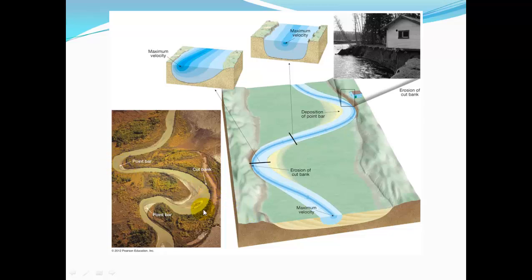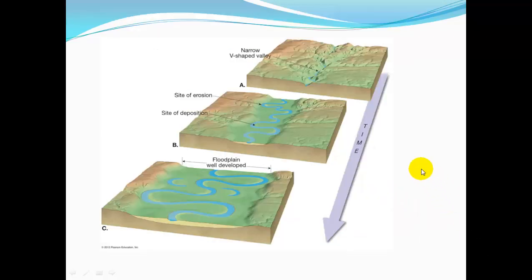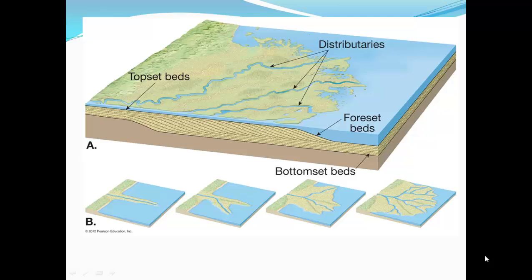The outside of a meander is cutting away — eventually a house there will fall into the river. On the inside, a point bar, a little beach, is being formed by deposition. The outside is the cut bank. Over time, a river starts at a narrow V-shaped valley, and when it gets closer to base level it pushes side to side to form meanders and a wide flood plain — like our very own Kissimmee River, which has a flood plain possibly two miles across.